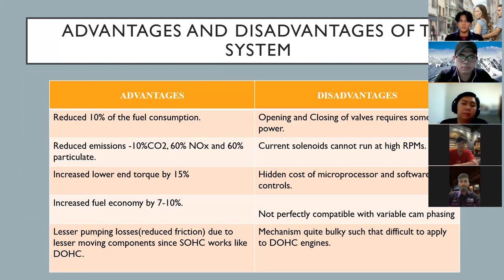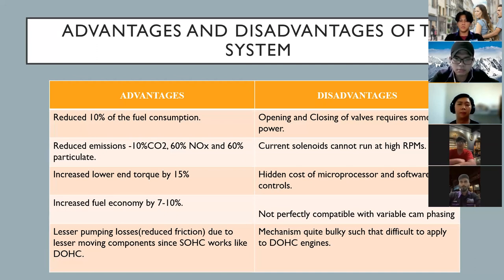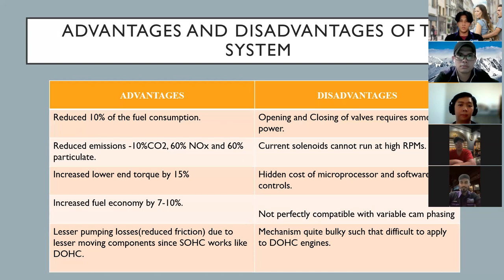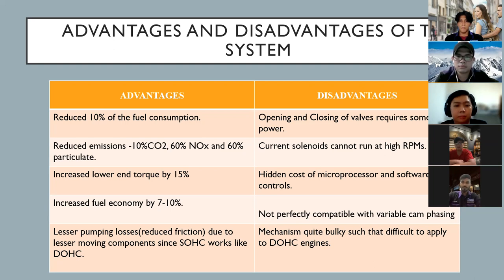Thank you Loh. My name is Navin. I'm going to present about the advantages and disadvantages of the VTEC system. The advantages of VTEC engines are: they are very reliable, offer enhanced fuel economy, and provide more power at high RPMs. When VTEC is engaged, the engine note also changes. Further advantages include: firstly, a 10% reduction in fuel consumption; secondly, reduced emissions — 10% CO2, 60% nitrogen oxide, and 60% particulate; thirdly, increased lower and top end torque by 15%; fourth, improved fuel economy by 7 to 10%; and finally, lesser pumping losses and reduced friction due to fewer moving components, as SOHC works like DOHC.